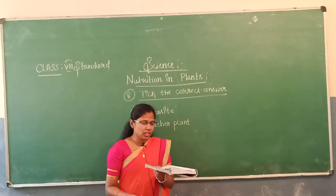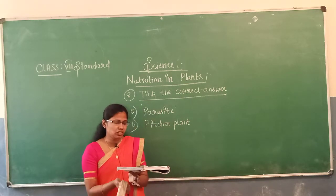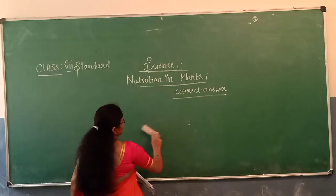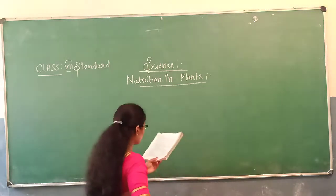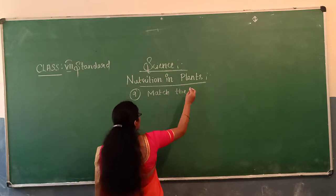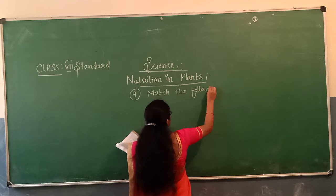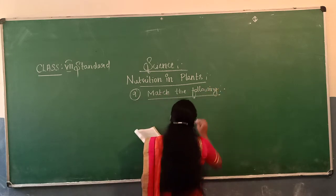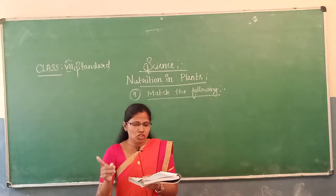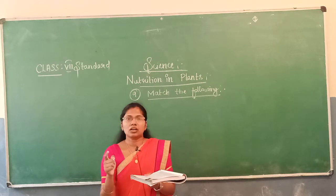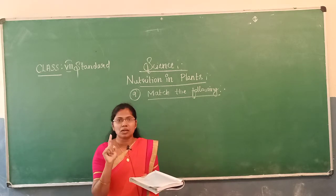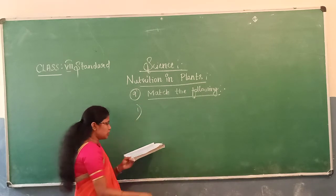Next we shall move on to the ninth main. In the ninth main they have given match the following. They have given two columns — column 1 contains the questions and column 2 contains the answers to be matched.